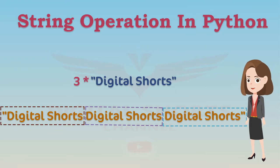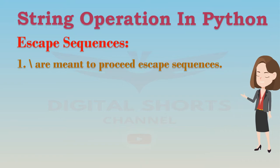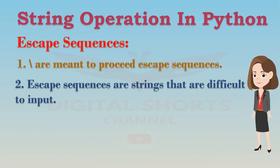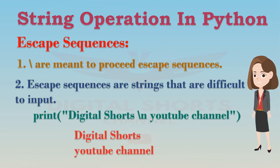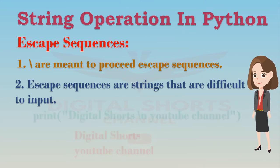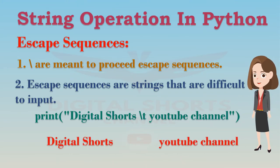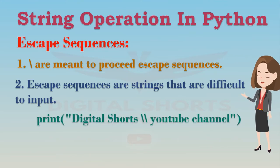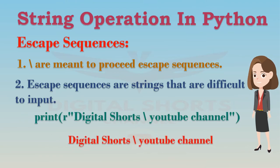This means you cannot change the value of the string, but you can create a new string. For example, backslash N represents a new line — the output shows a new line after the backslash N is encountered. Similarly, backslash T represents a tab, and the output shows a tab where the backslash T is. If you want to place a backslash in your string, use a double backslash. The result is a backslash after the escape sequence. We can also place an R in front of the string.